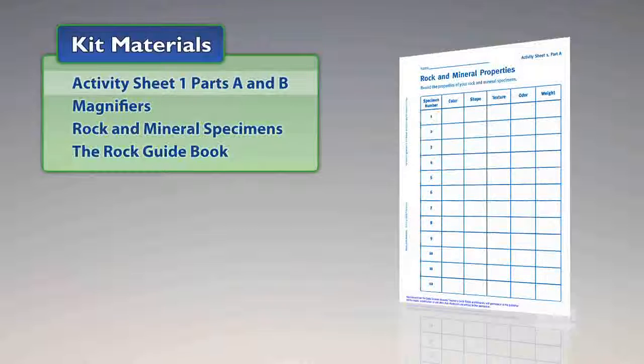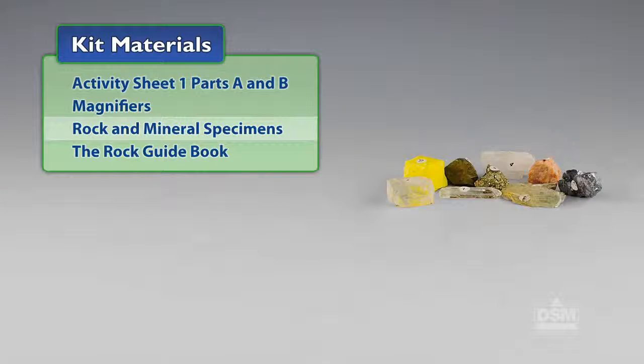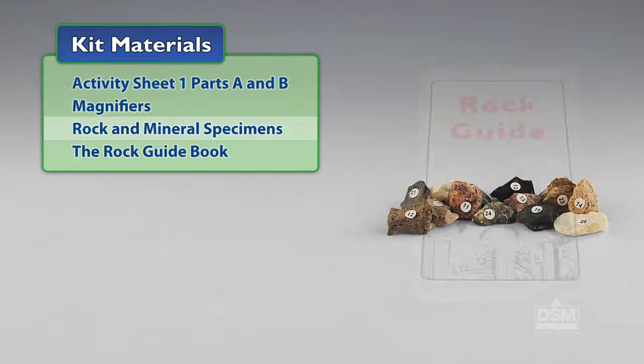You will need the following materials from the kit: Activity Sheet 1, Parts A and B, Magnifiers, Rock and Mineral Specimens, and the Rock Guide Book.